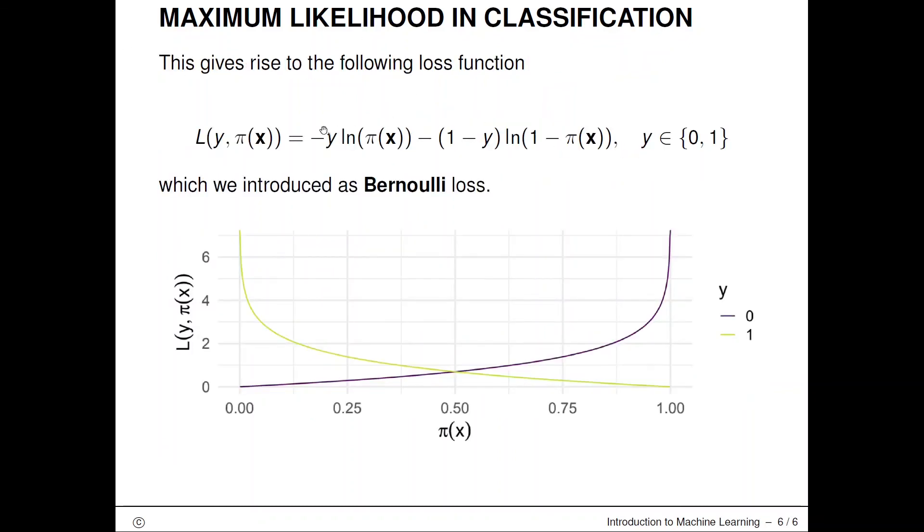This gives rise to this loss function that we introduced before without having really understood where the formula comes from. You can now derive it from first principles by going from the reasonable intuitive Bernoulli distribution and then taking minus log of things. This ends the section.